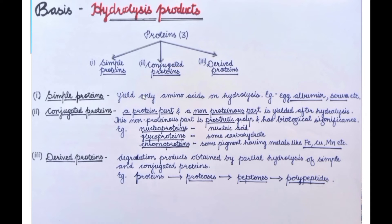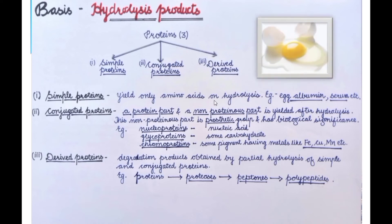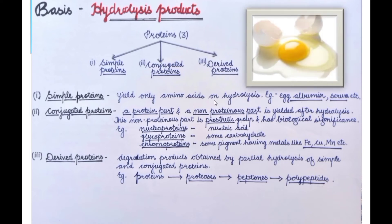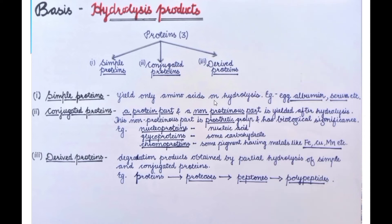Simple proteins are proteins which upon hydrolysis yield only amino acids. We don't get any other product — when you add water for hydrolysis, you will get only amino acids in the product. Examples include egg albumin, which is a type of simple protein, and serum, which also contains simple proteins.